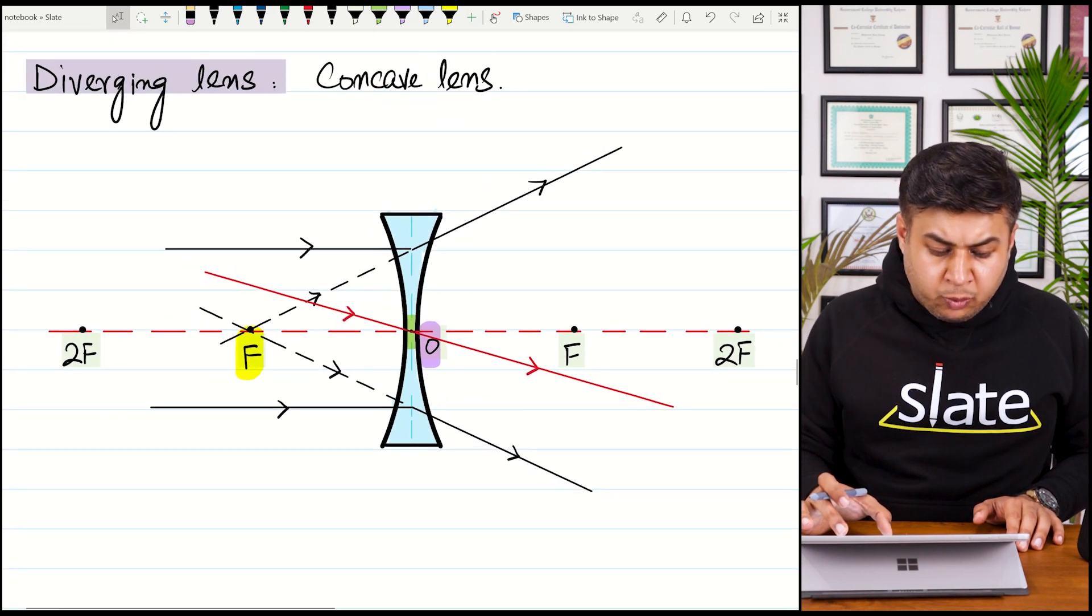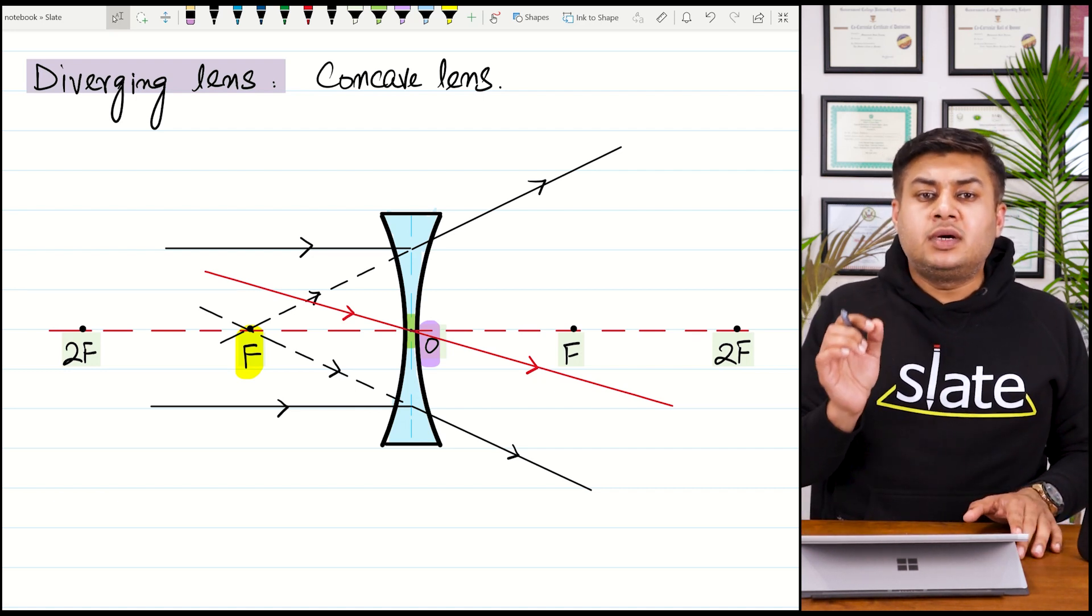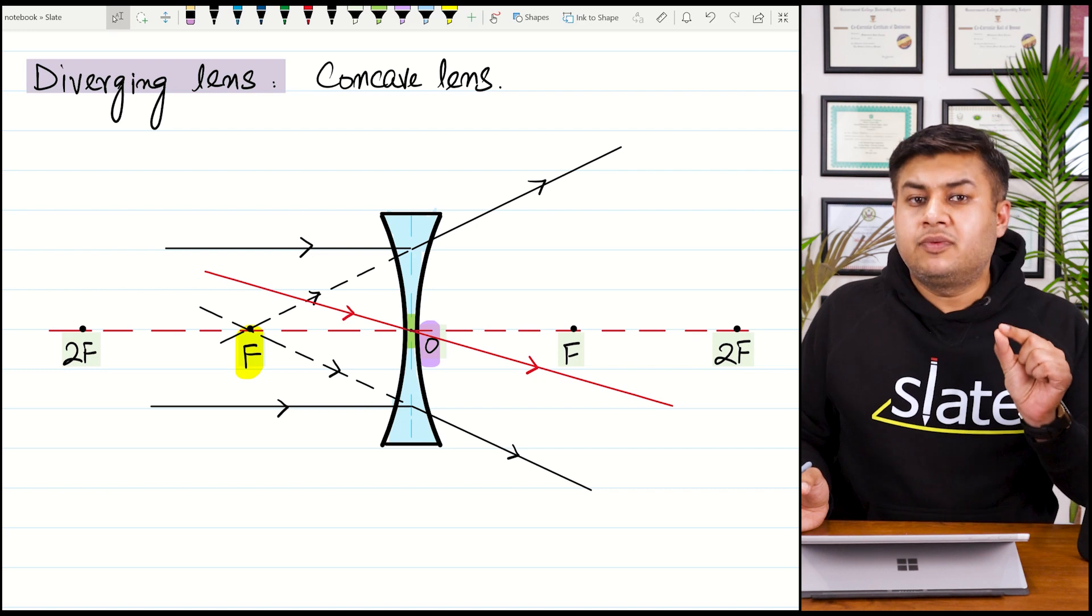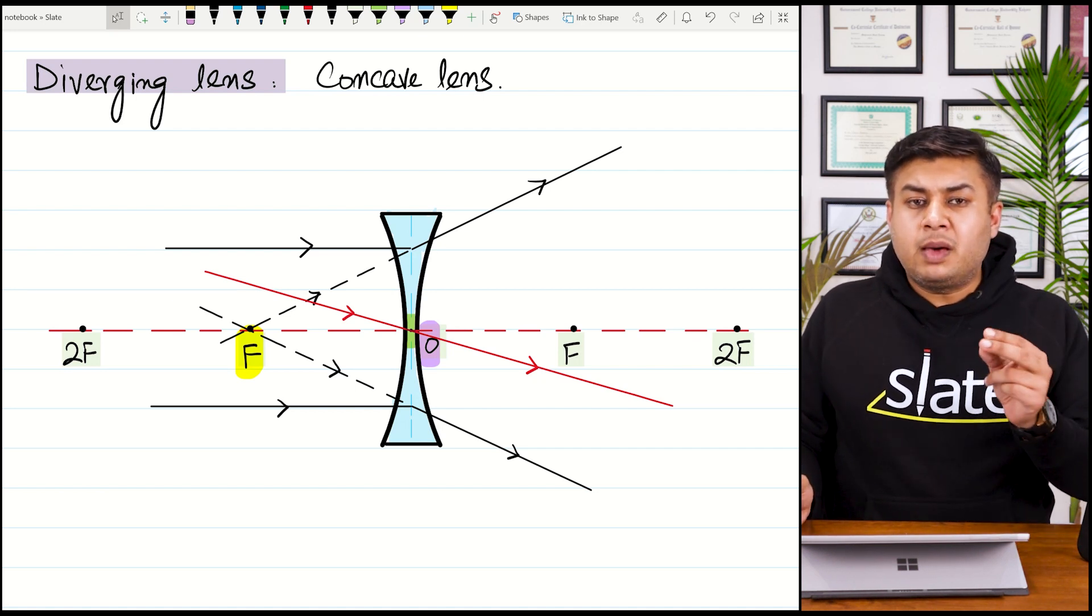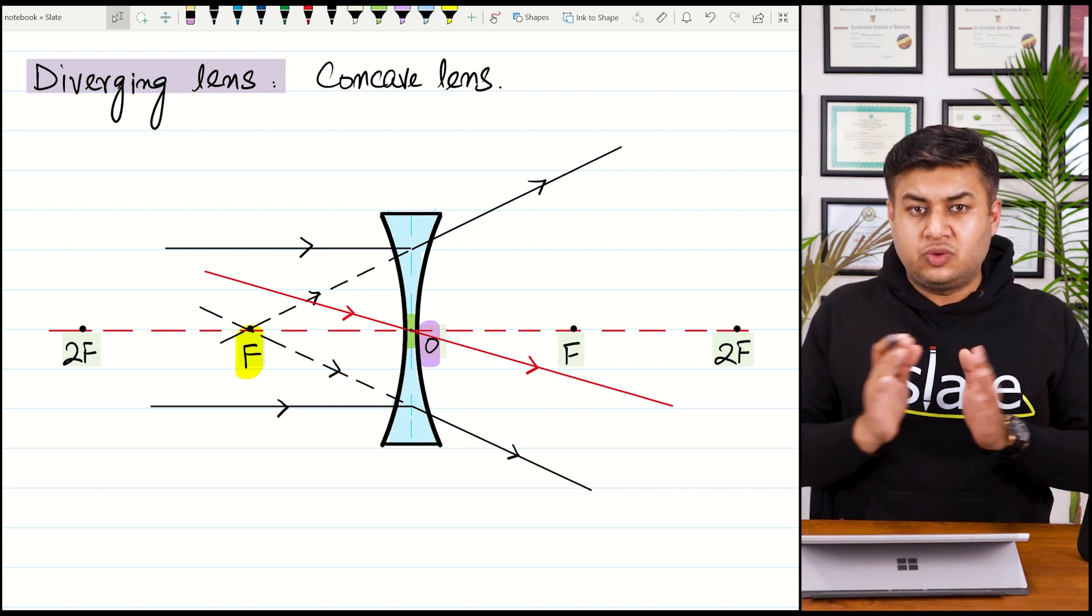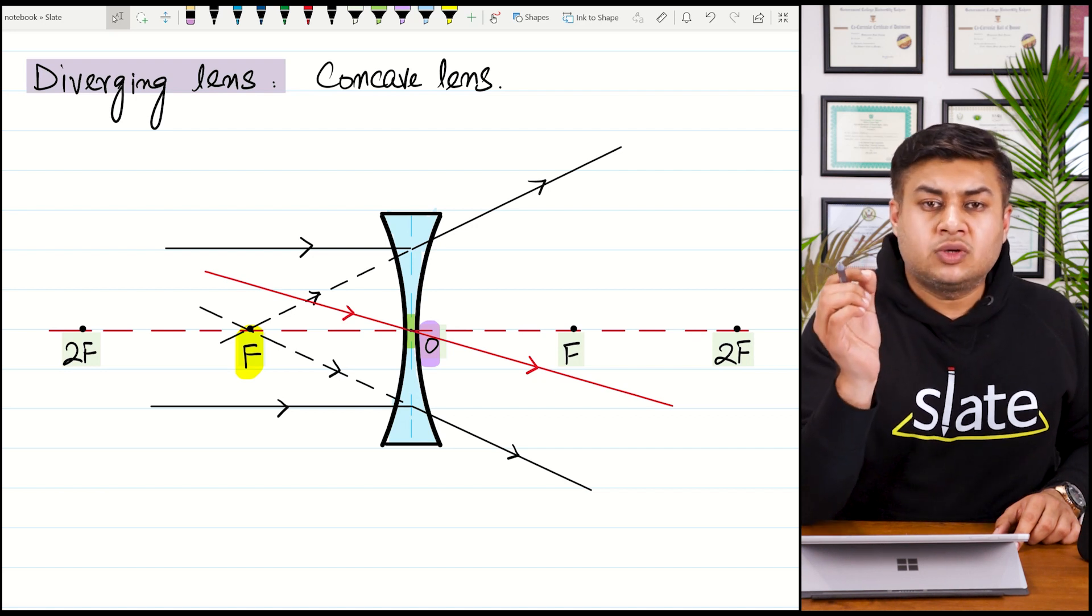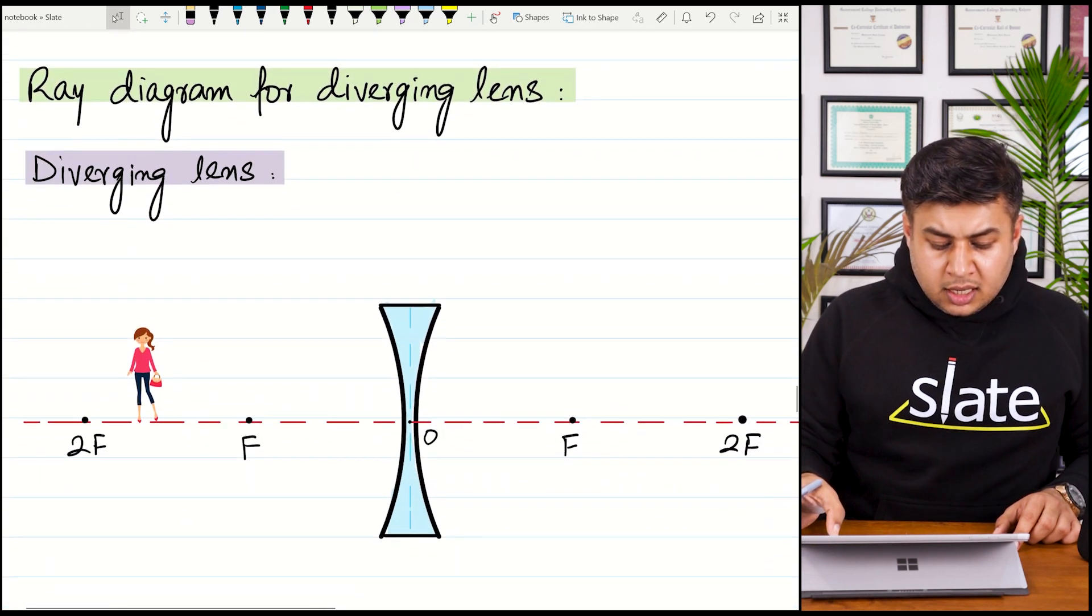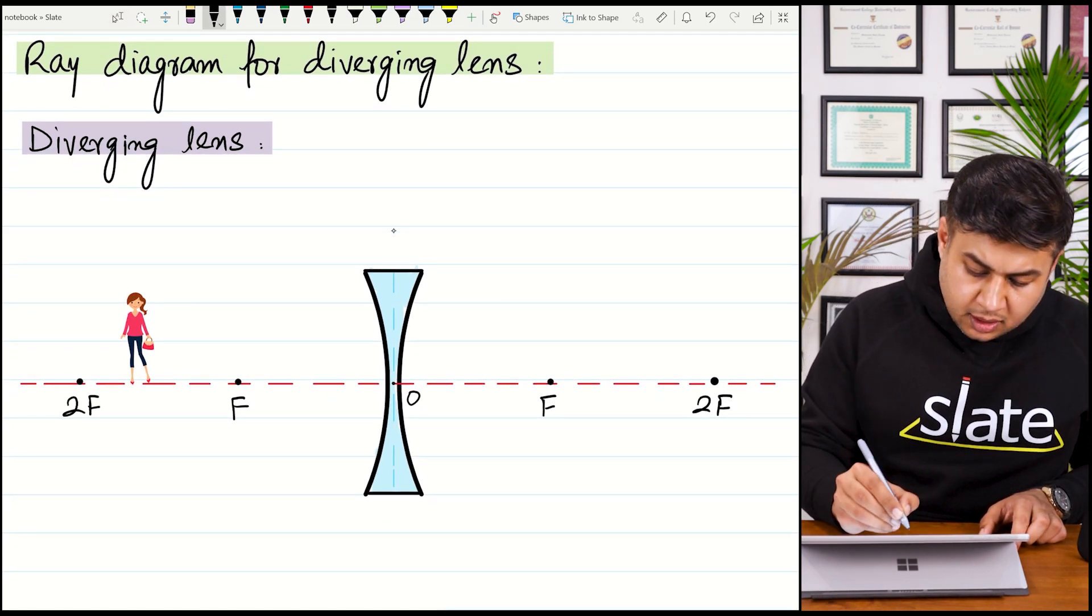So if you remember these two rules: rule number one, if the ray is coming parallel to the principal axis, it will diverge such that when you stretch it inside the lens, it will pass through the principal focus. And the ray of light which is coming through the optic center will go undeviated. If you memorize these two rules, you won't face any difficulty in drawing ray diagrams. In the concave lens case, we don't have case one, case two, case three like we had in convex lens. Moving on to the ray diagram for the diverging lens, here you can see a side view of a concave lens.